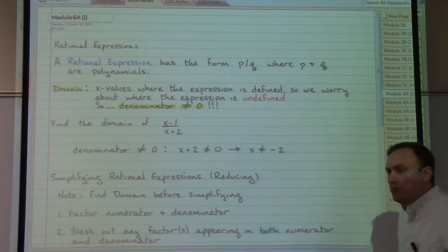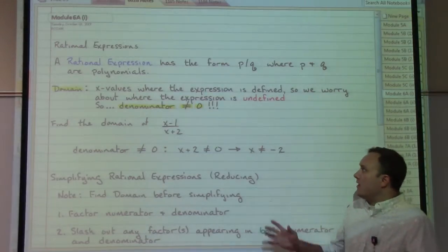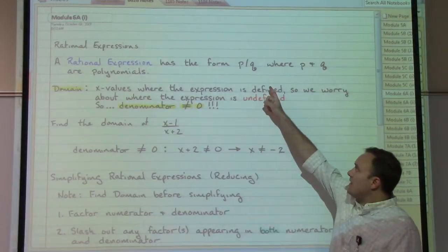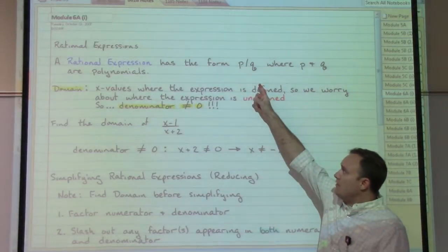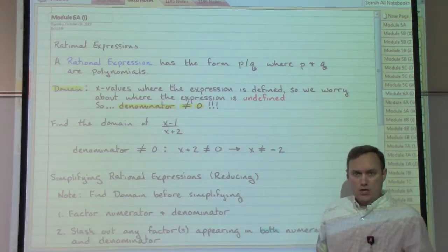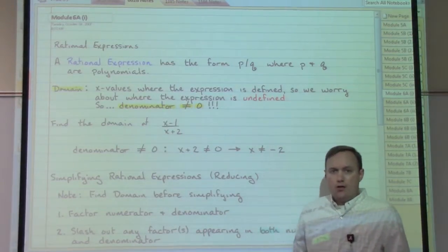Rational expressions. A rational expression is defined as an expression that has p over q where the p and the q expressions are both polynomials.